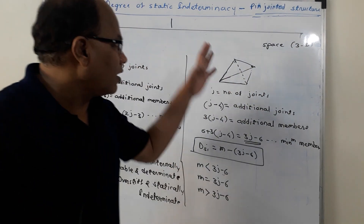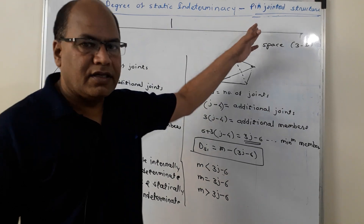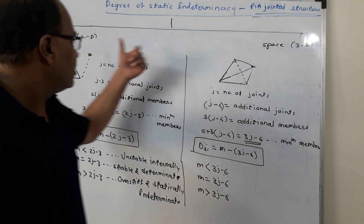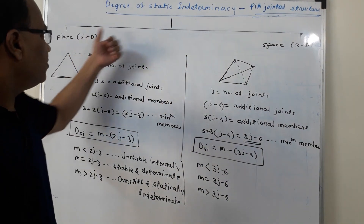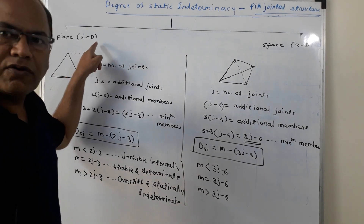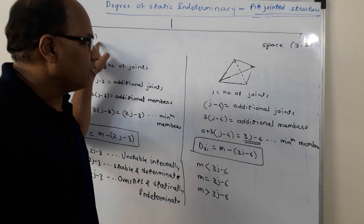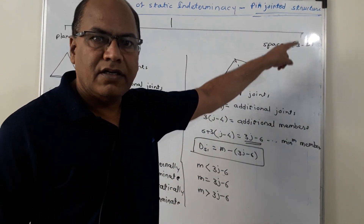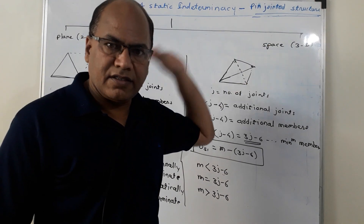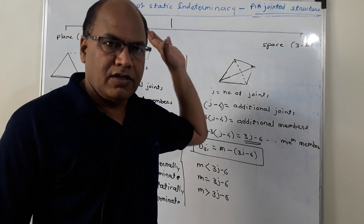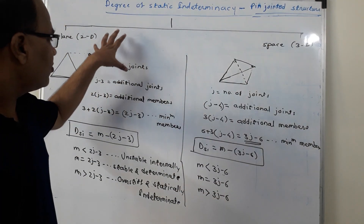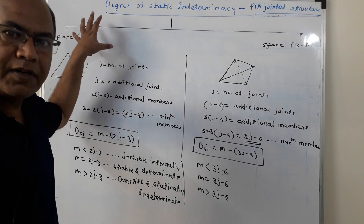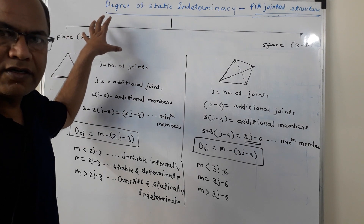Pin-jointed structures are classified into two types: plain pin-jointed structure, which is also called a 2D structure, and space pin-jointed structure, which is also called a 3D structure. Let us see what is the minimum number of members required to preserve the geometry in plain pin-jointed structures.